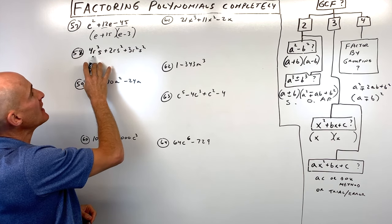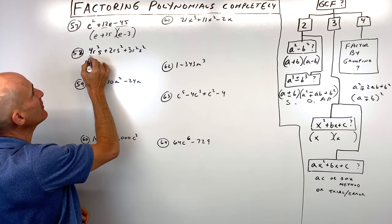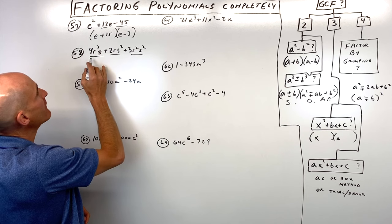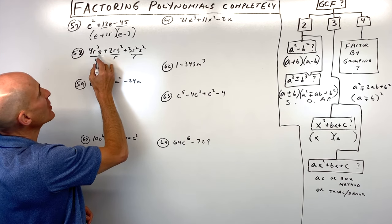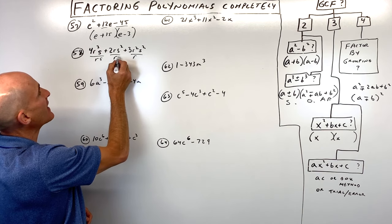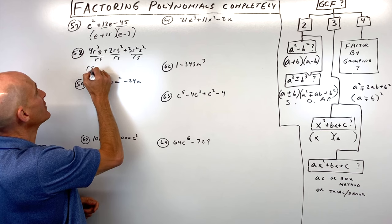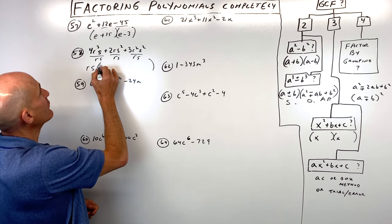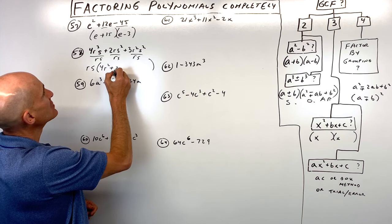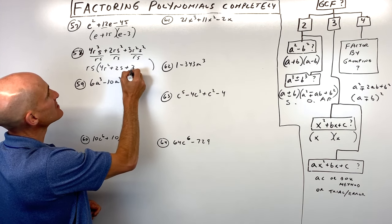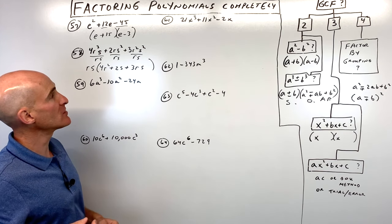Number fifty-eight is a trinomial with a greatest common factor of rs — they all have at least one r and at least one s in common. Factor out rs to get rs times 4r squared plus 3rs plus 2s. We can't factor that any further.